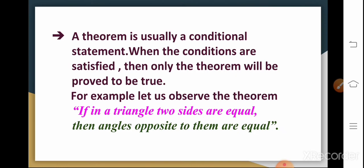A theorem is usually a conditional statement. When the conditions are satisfied, then only the theorem will be proved to be true. For example, let us observe the theorem: If in a triangle two sides are equal, then the angles opposite to them are equal.